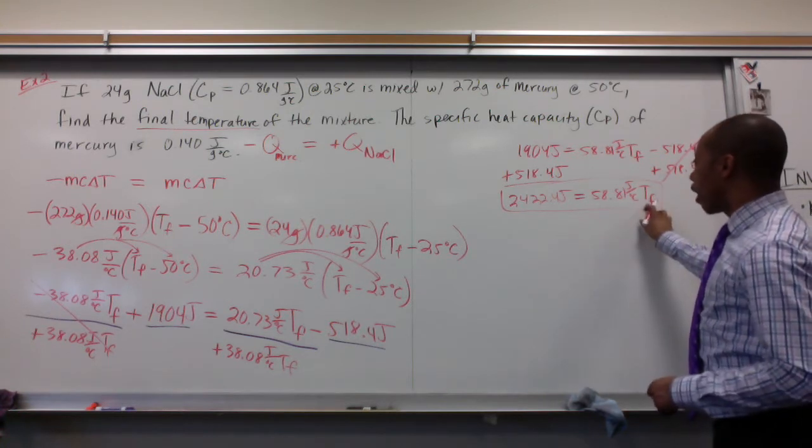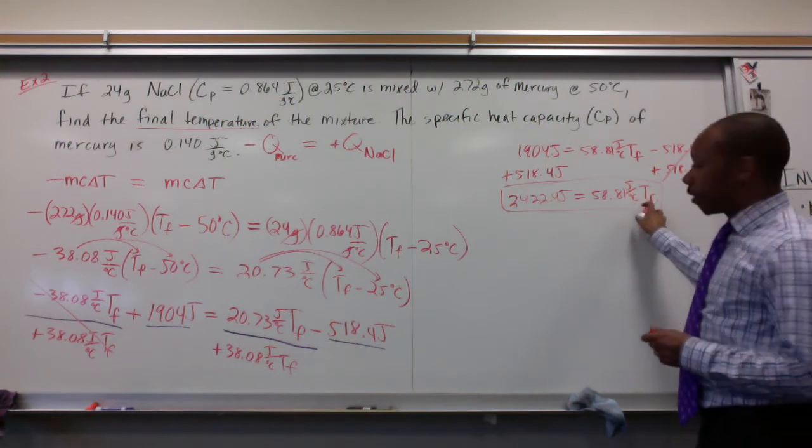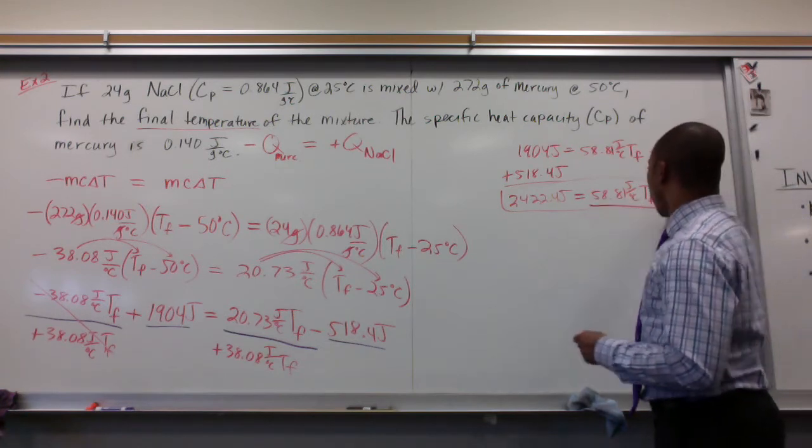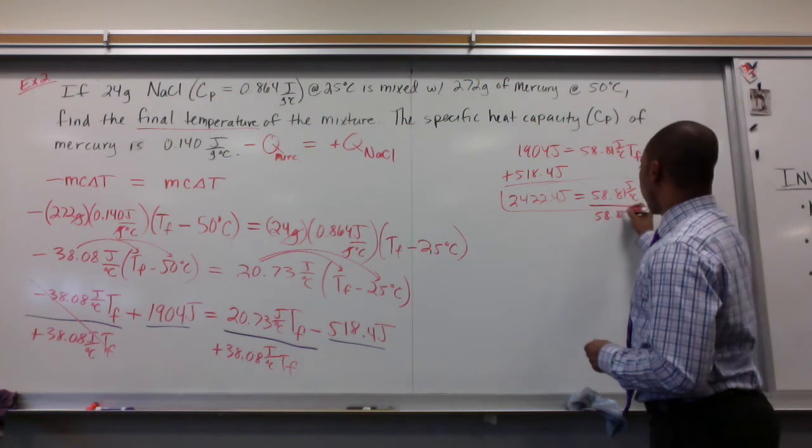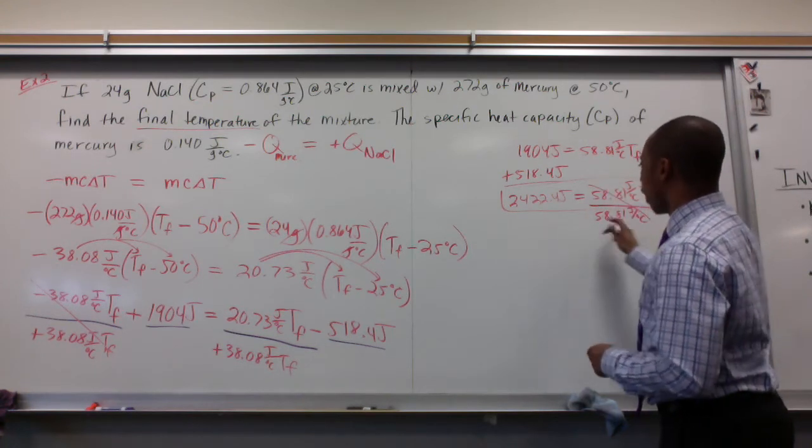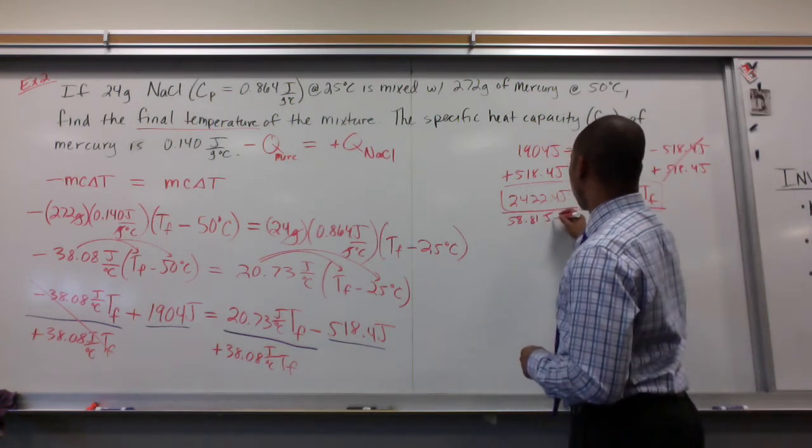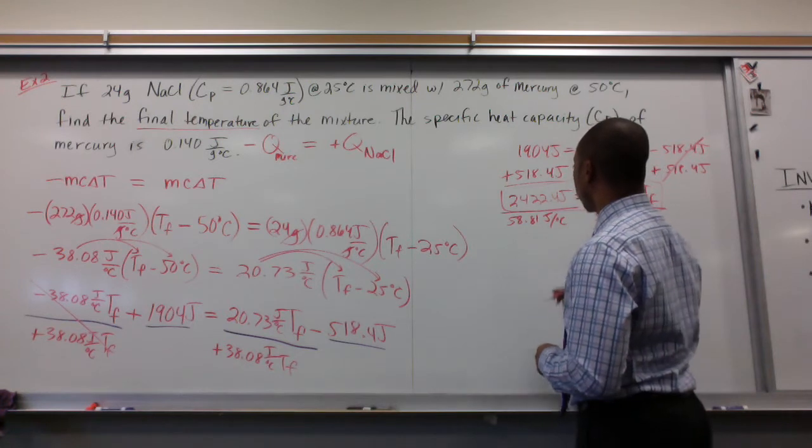So in order to solve for tf, I have to isolate it. I'm going to divide both sides by what is multiplied times. So 58.81 joules per degree celsius, that cancels out. I divide the same on this side, 58.81 joules per degree celsius.